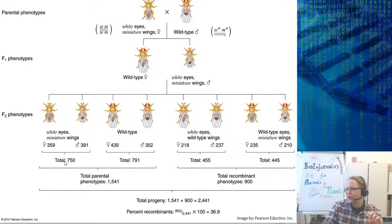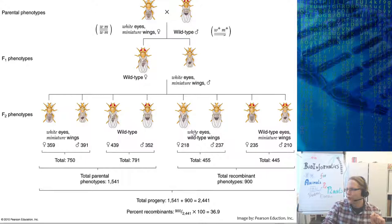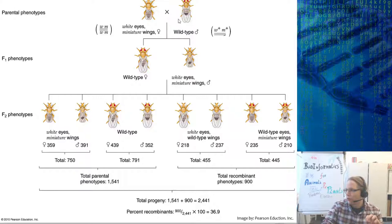We can count up in the F2 to see how many individuals we get. In this case we get 750 with the phenotype of the original mother and 791 with the phenotype of the original father. Then we have a certain number of recombinants where recombination took place between white eyes and wings, and another number of recombinants which have wild type eyes and miniature wings. In total there are 1541 individuals which inherited the original parental genotypes, and 900 individuals who are recombinant.